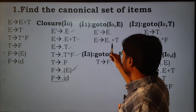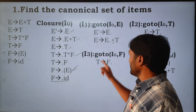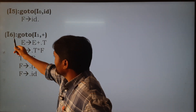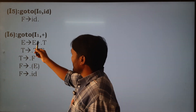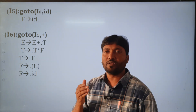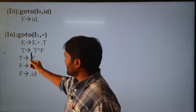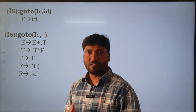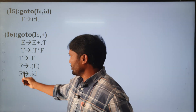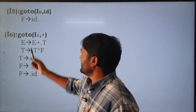Now come to I1. Is there any symbol after the dot? Yes, there is a plus. We apply goto(I1, plus). The dot symbol is moved one position to the right: E → E+.T. Since there is a non-terminal T after the dot, we add its two productions with dot: T → .T*F and T → .F. Again there is capital F, so we add F's productions with dot. This is goto(I1, plus).